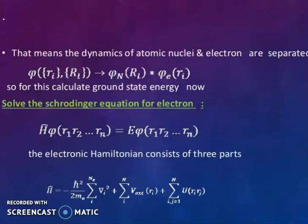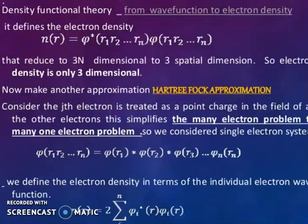Density functional theory: from wave function to electron density. It defines the electron density n(r) = phi*(r1,r2,...rn) phi(r1,r2,...rn) that reduces from 3N dimensional to 3 spatial dimensions. So electron density is only three-dimensional. Now make another approximation: Hartree-Fock approximation.